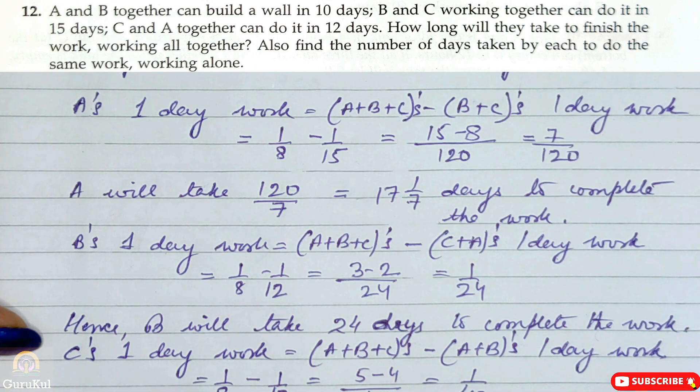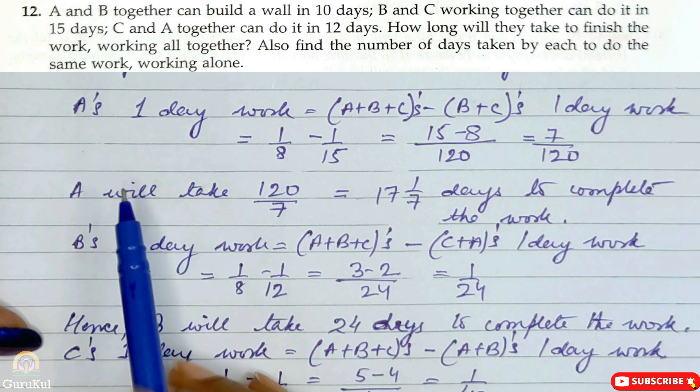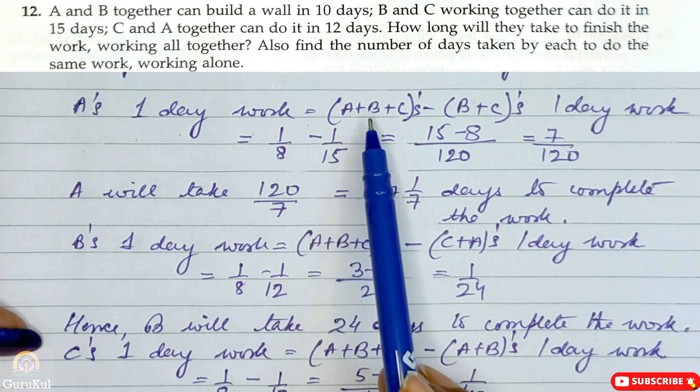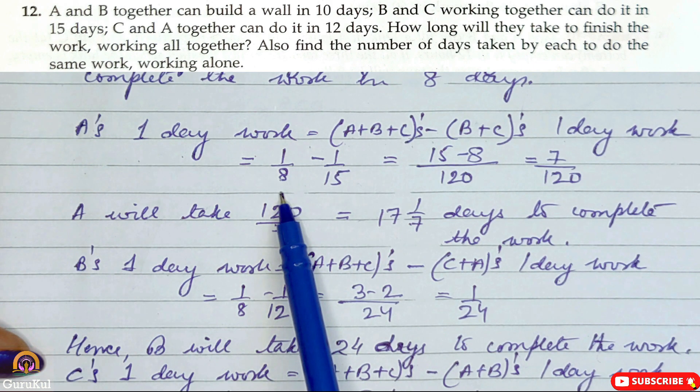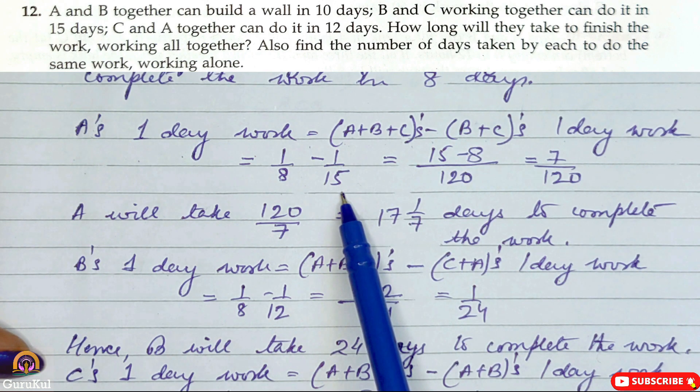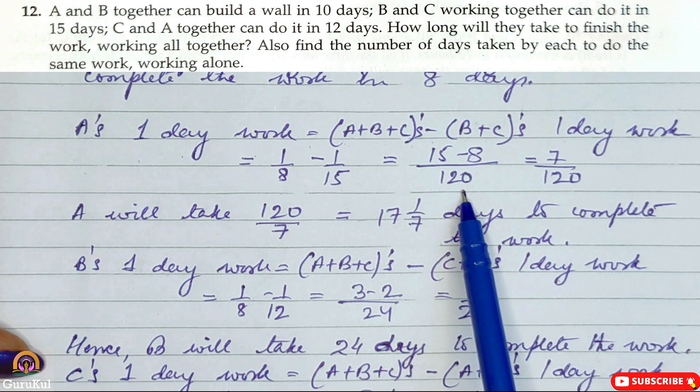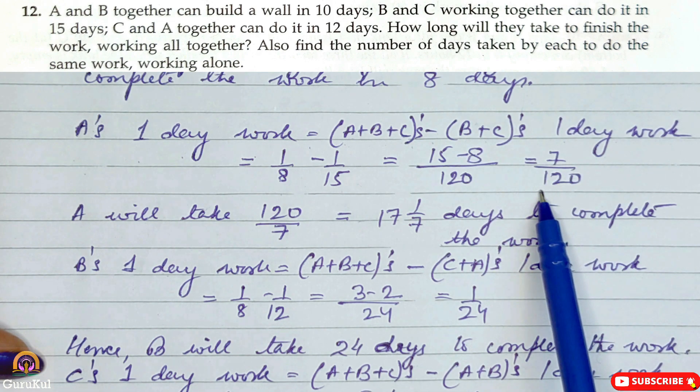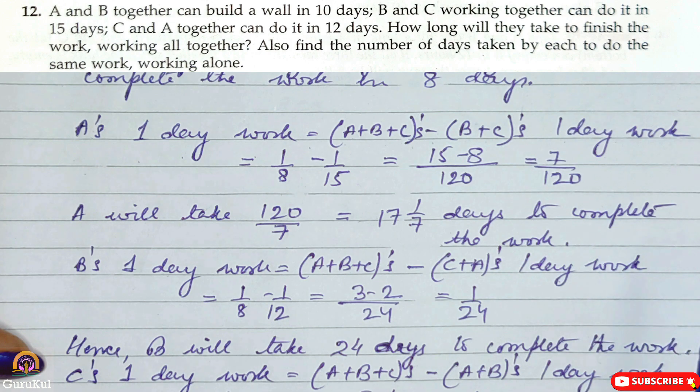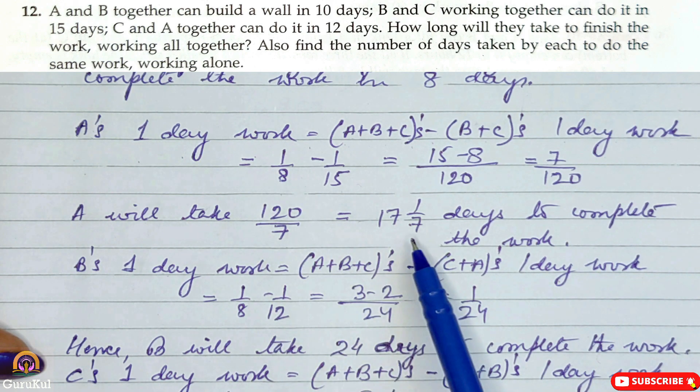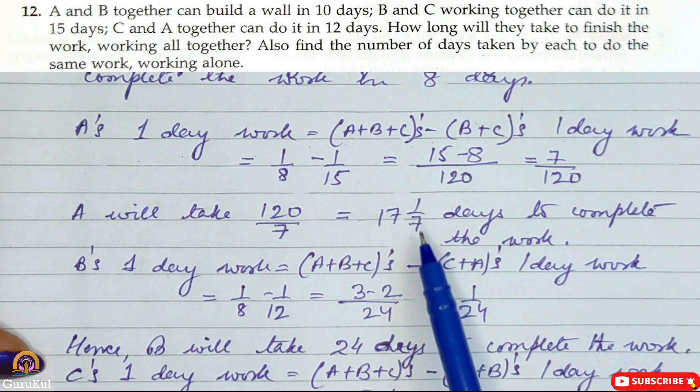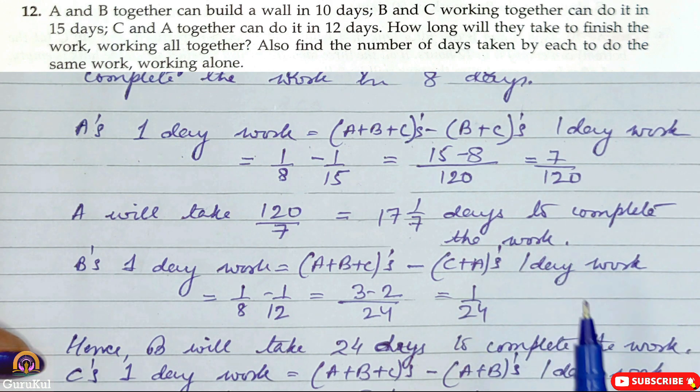Now the next part of the question asks if A, B, C work separately, alone, how much time will it take to complete the given work? So A's one day work is equal to A plus B plus C's minus B plus C's one day work. So it's 1 by 8 minus 1 by 15. LCM is 120, so 15 minus 8, that gives us 7 by 120. So A will take the reciprocal, 120 by 7, which is 17 and 1 by 7 days to complete the given work if A is working by himself.